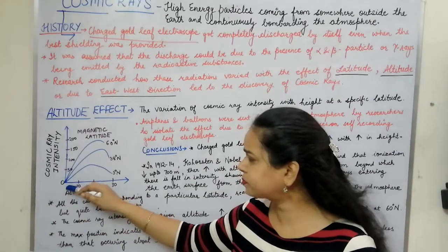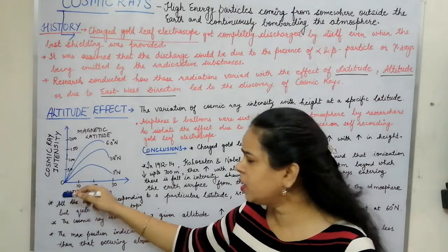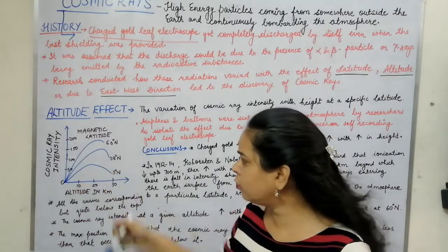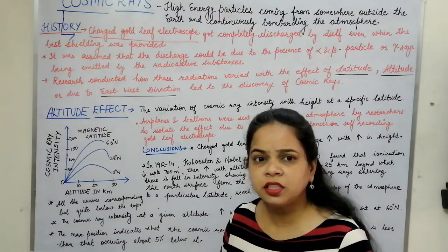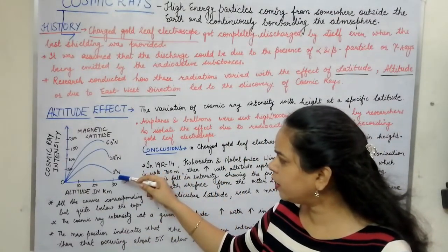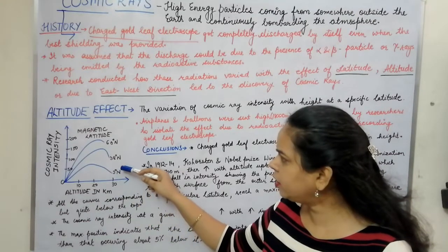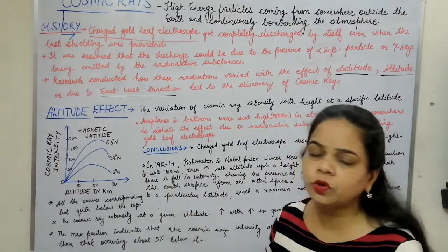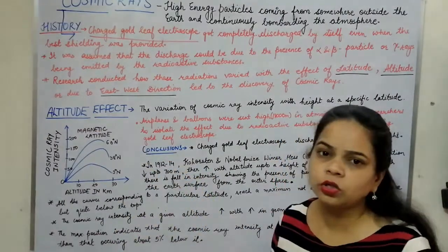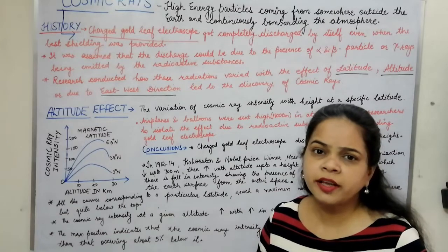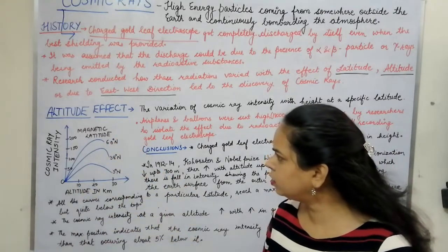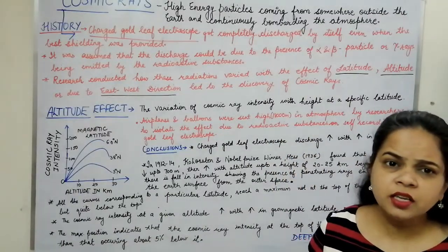This pattern was the same for all latitudes at which cosmic ray intensity was calculated with respect to altitude — this is for 3 degrees north latitude, this is for 38 degrees north latitude, and this is for 60 degrees north latitude. As the value of latitude increased, the cosmic ray intensity also increased, but the behavior with altitude — increasing up to 20 to 22 kilometers and then decreasing — remained the same.